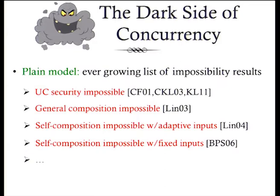When it comes to designing protocols in the plain model, by and large, most of the results in this area have been negative. Indeed, starting with the impossibility of achieving UC security, there has been a long line of impossibility results ruling out general composition and even security under weaker notions of concurrent self-composition in various settings such as adaptive inputs and using fixed inputs, and so on. So things might look really pretty hopeless and bleak.